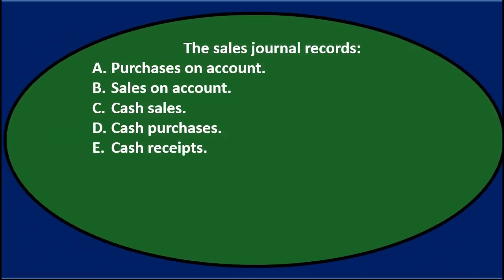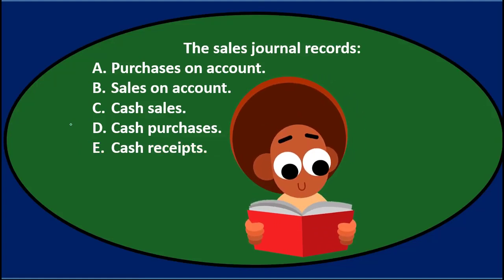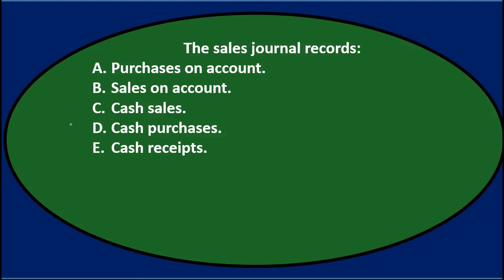First question: the sales journal records A, purchases on account; B, sales on account; C, cash sales; D, cash purchases; or E, cash receipts. We'll read it one more time, then see if we can go through it and use the process of elimination to narrow down the options.